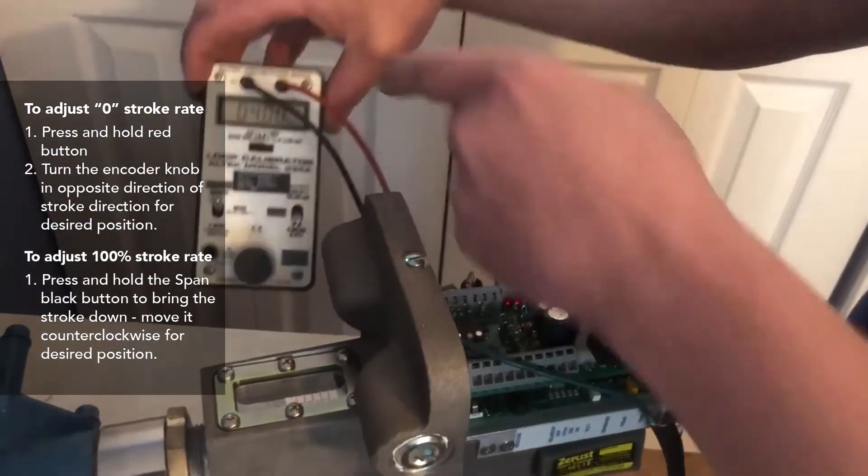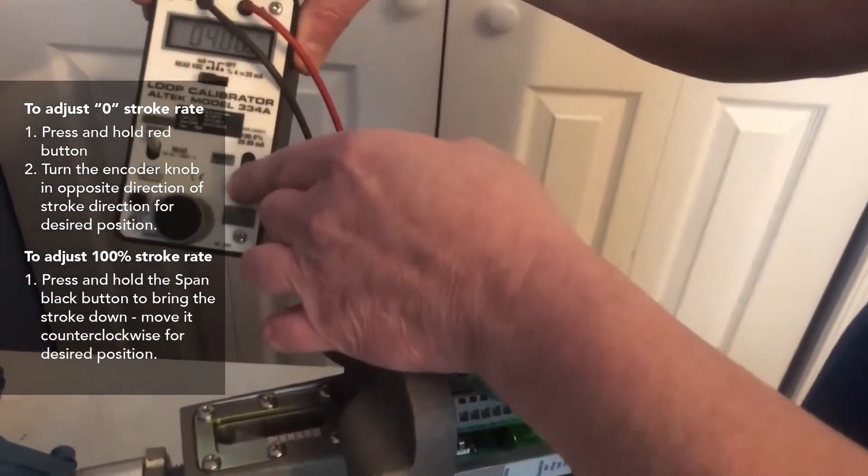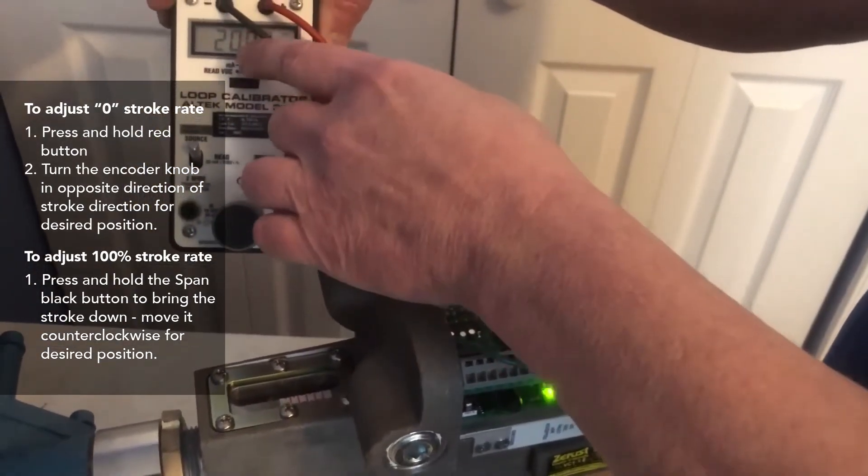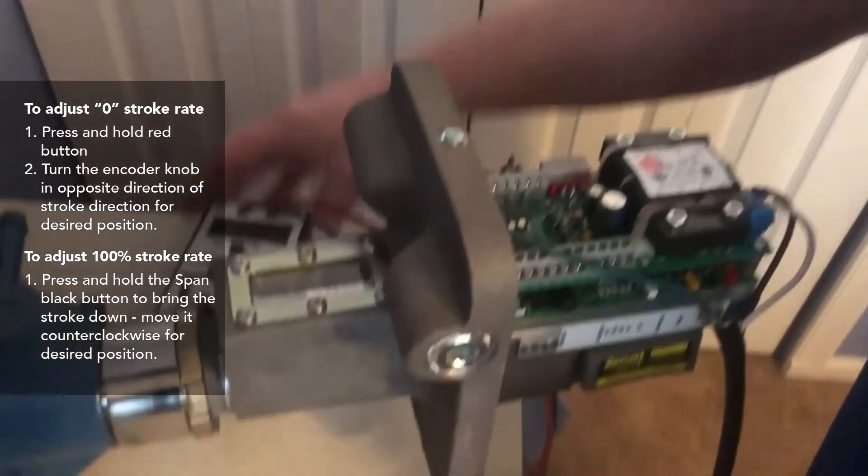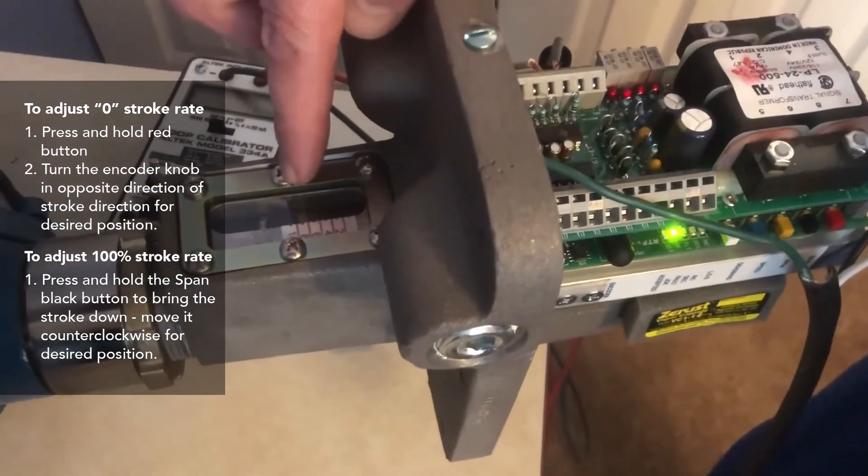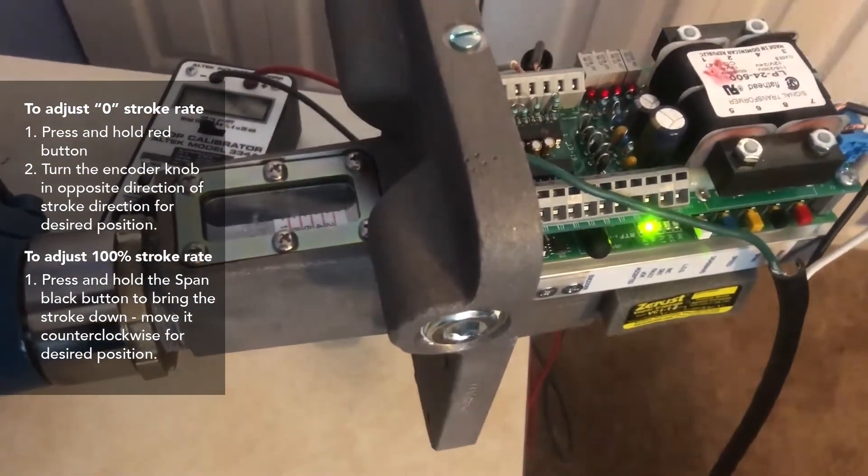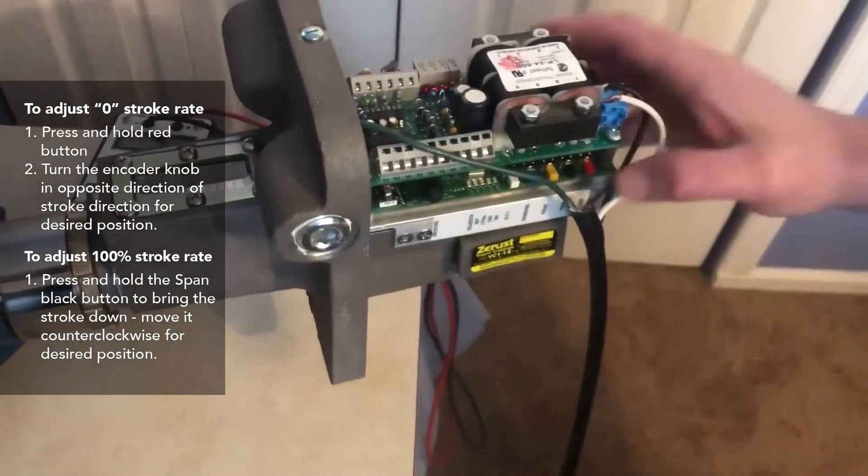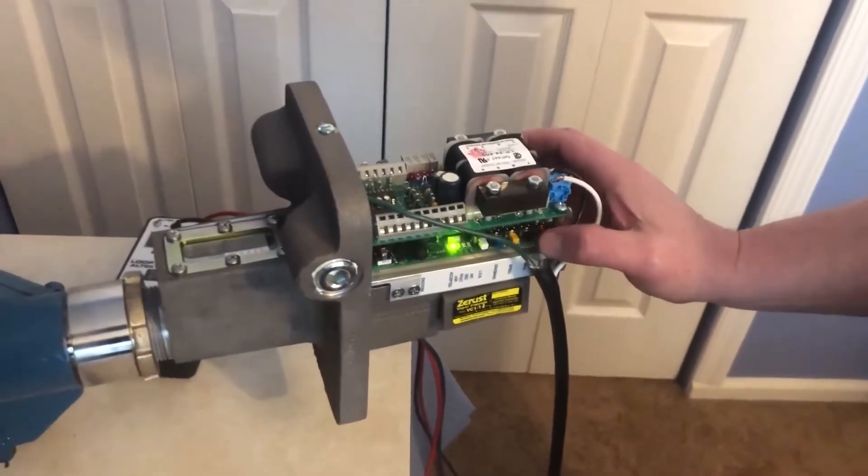And we can do the same thing when it goes to 20 milliamps. We're changing the 20. Now we're still at 100% stroke. But now if you want to adjust that stroke, we press the black button or the span.